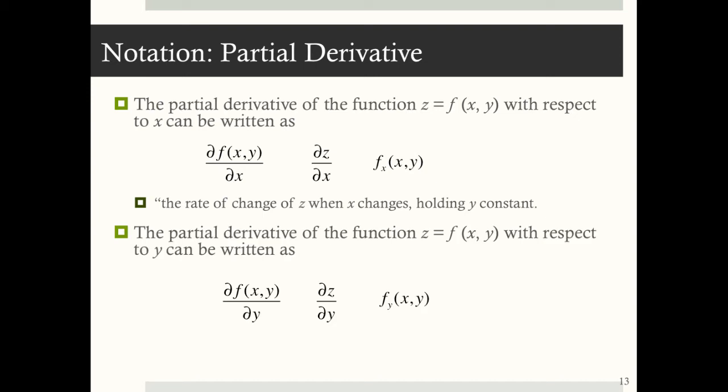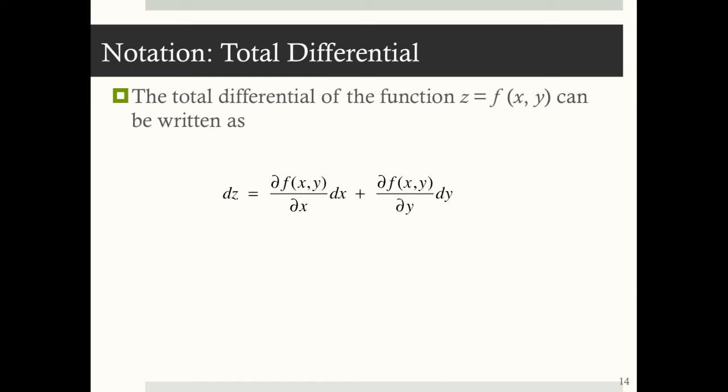The partial derivative of the same function but with respect to y can be written in similar ways, and it tells us the rate of change of z when y changes holding x constant. The total differential of z equals f(x, y) can be written as: dz equals the partial derivative of f with respect to x times dx, plus the partial derivative of f with respect to y times dy.